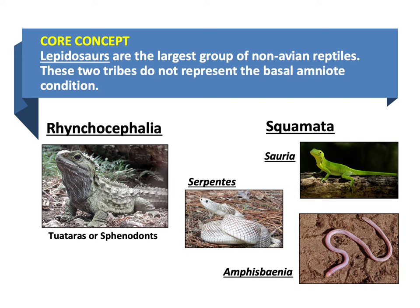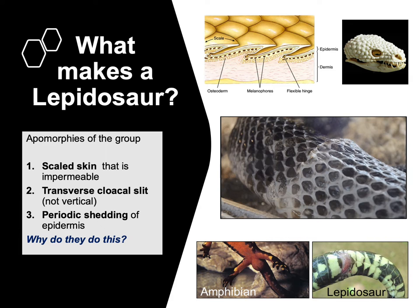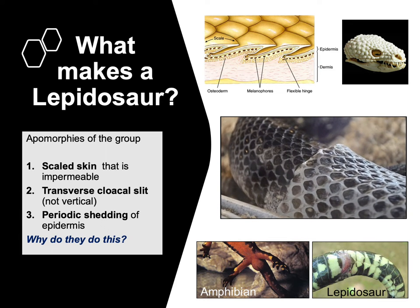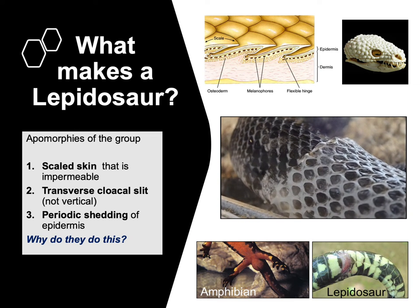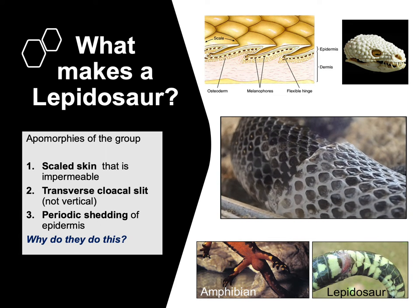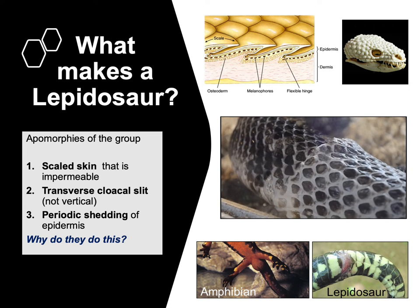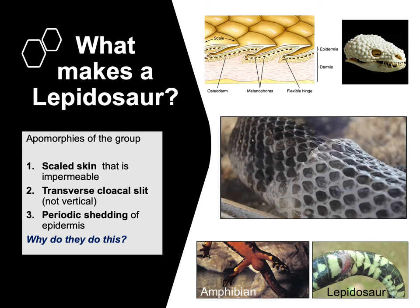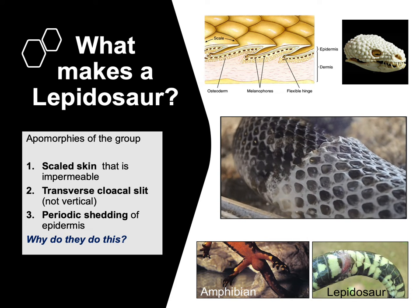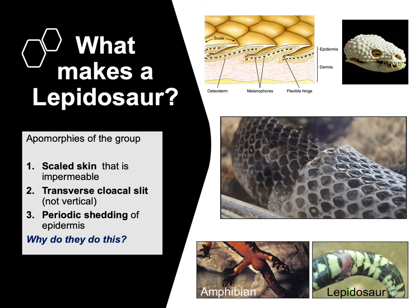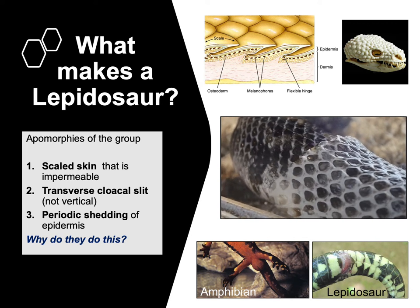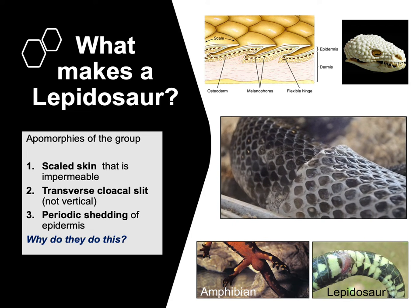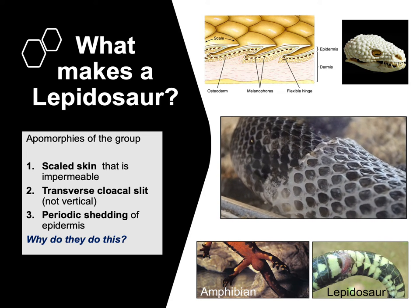So, what is a lepidosaur? A lepidosaur is defined by three primary characteristics. The first is they have scales. The scales are made from osteoderms — small sections of ossified bone covered by keratin — arranged in an overlapping, brigadine armor kind of way. These are embedded in the epidermis and rooted in the dermal layer, meaning they go quite deep.